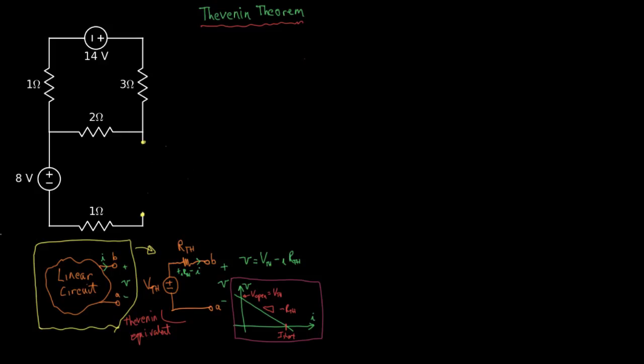And to find the Thevenin equivalent, we're going to do two things. We're going to look to find the V open circuit right here. And we will also have to find the equivalent resistance looking into that pair of terminals. Let's start by looking at the equivalent resistance. We turn the sources off.